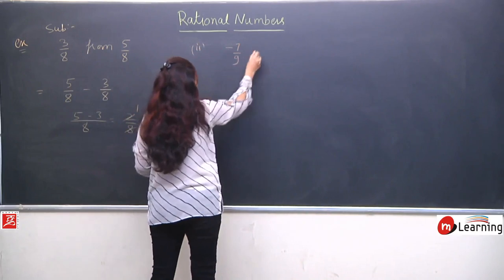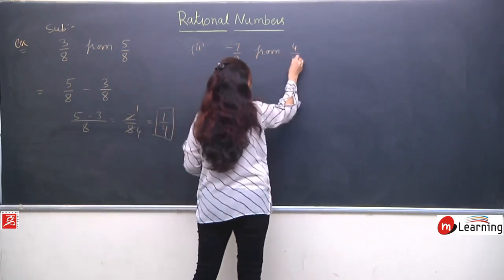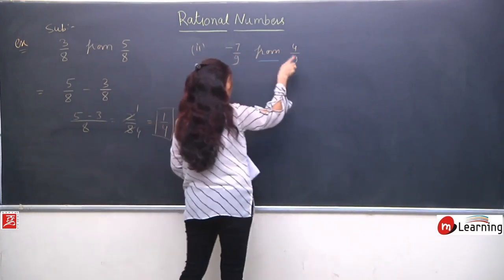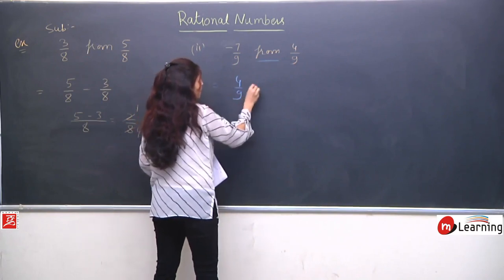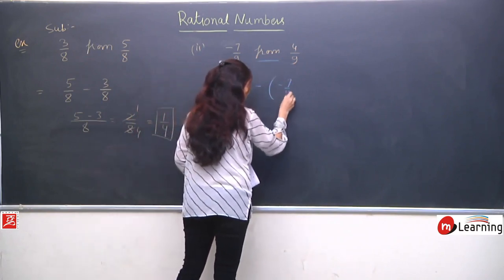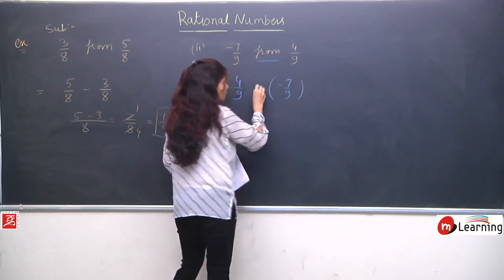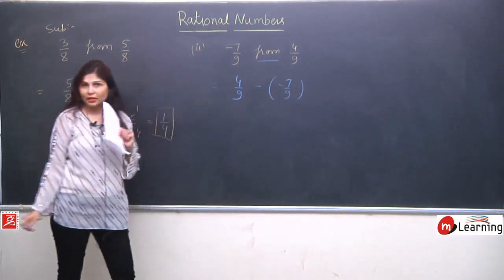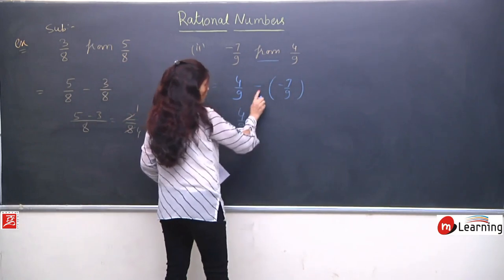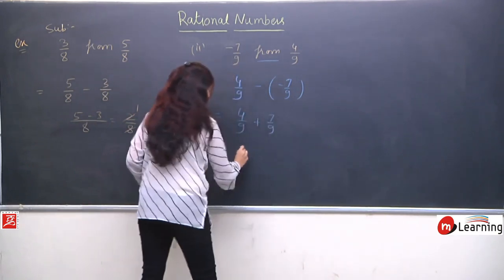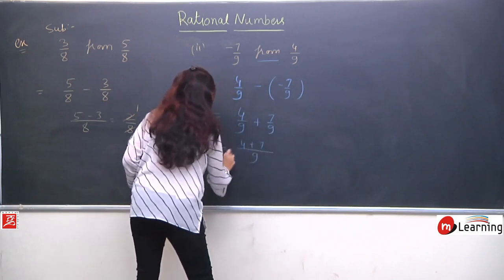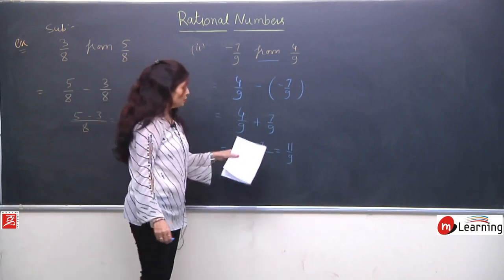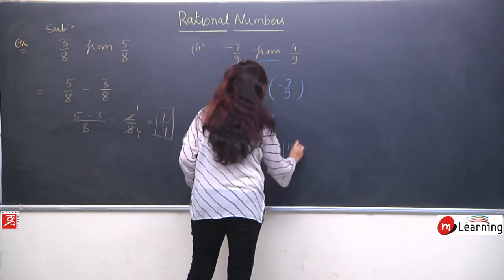Second subtraction example: subtract -7/9 from 4/9. Because of 'from', 4/9 comes first. So the expression is 4/9 - (-7/9). This minus is for subtraction, and the minus on 7/9 is from the question. Opening the bracket: minus minus is plus, so we get (4 + 7)/9 = 11/9. We check if 11/9 simplifies further — it does not, so this is the final answer.